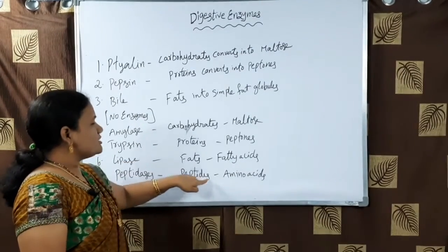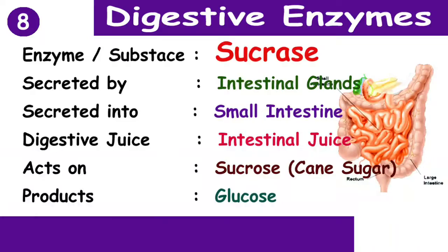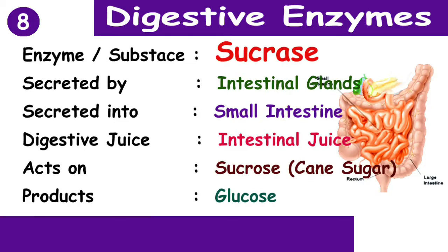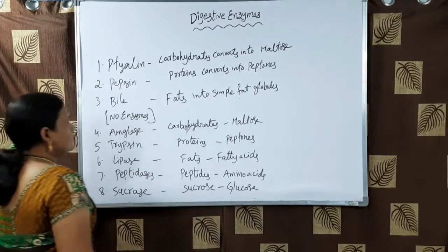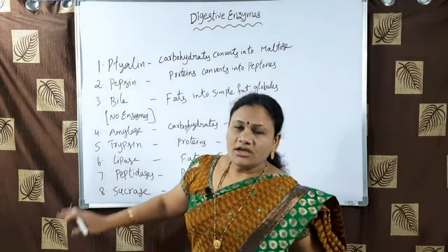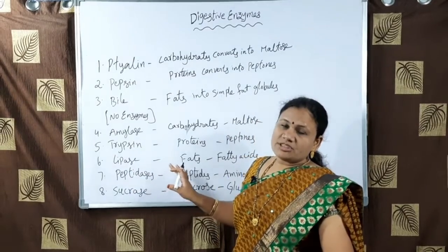The eighth enzyme is sucrase. It is secreted by intestinal glands into the small intestine, and the digestive juice is intestinal juice. It acts on sucrose — notably, the enzyme is sucrase and the substance is also sucrose — and converts sucrose into glucose.